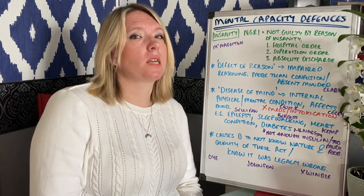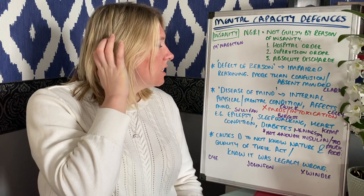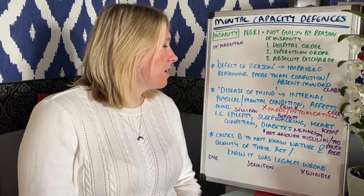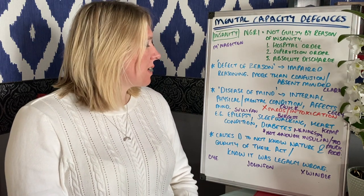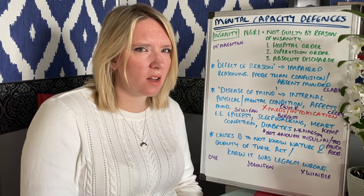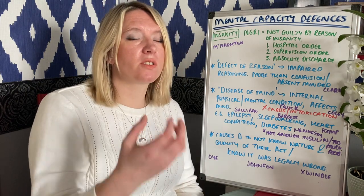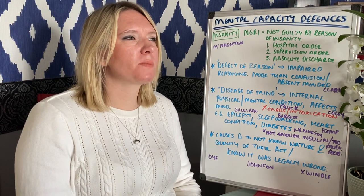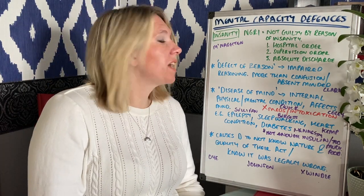The second element is that the defective reasoning must be caused by a disease of the mind. Disease of the mind can be misleading — it has to be internal, and it can be a mental condition or something physical that affects the mind. In Kemp, a heart condition caused his arteries to harden, affecting his brain and mental functioning, causing a temporary loss of consciousness where he attacked someone with a hammer. So it must be something affecting your mind and mental processes.